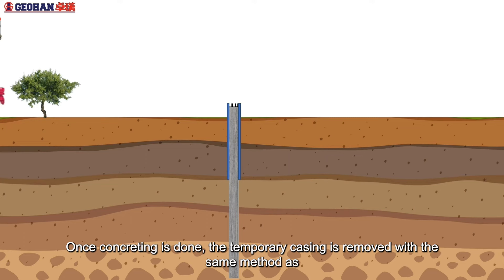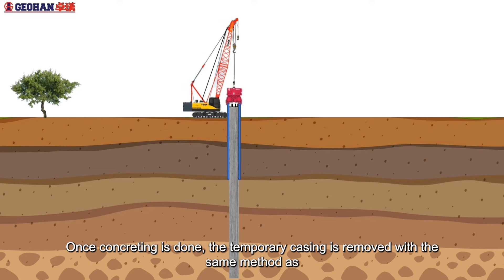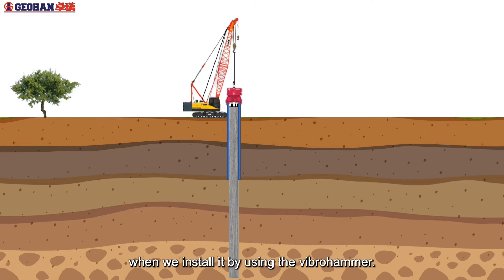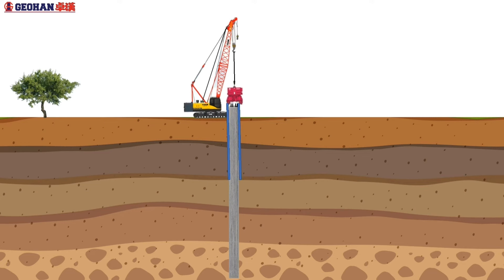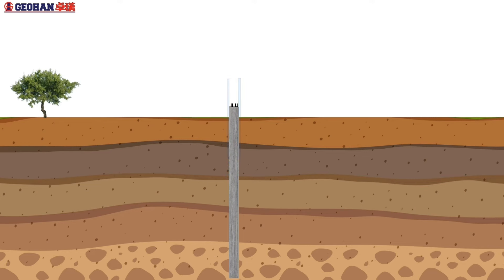Once concreting is done, the temporary casing is removed with the same method as when we installed it, by using the vibro-hammer. So now, a bored pile is completed.